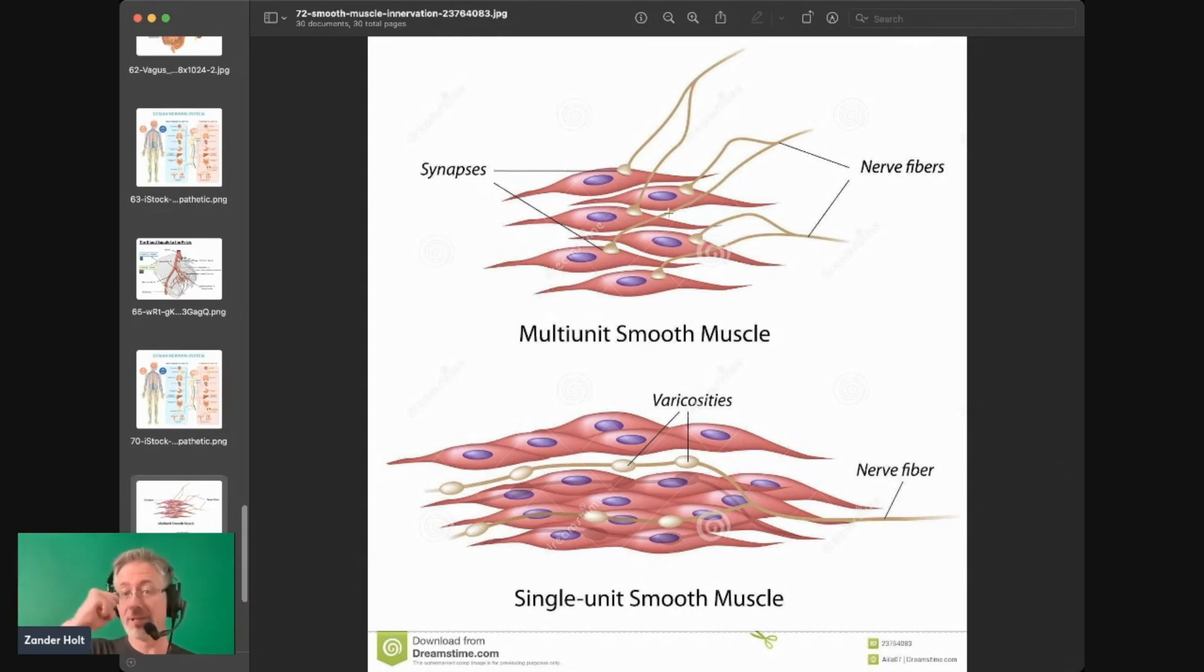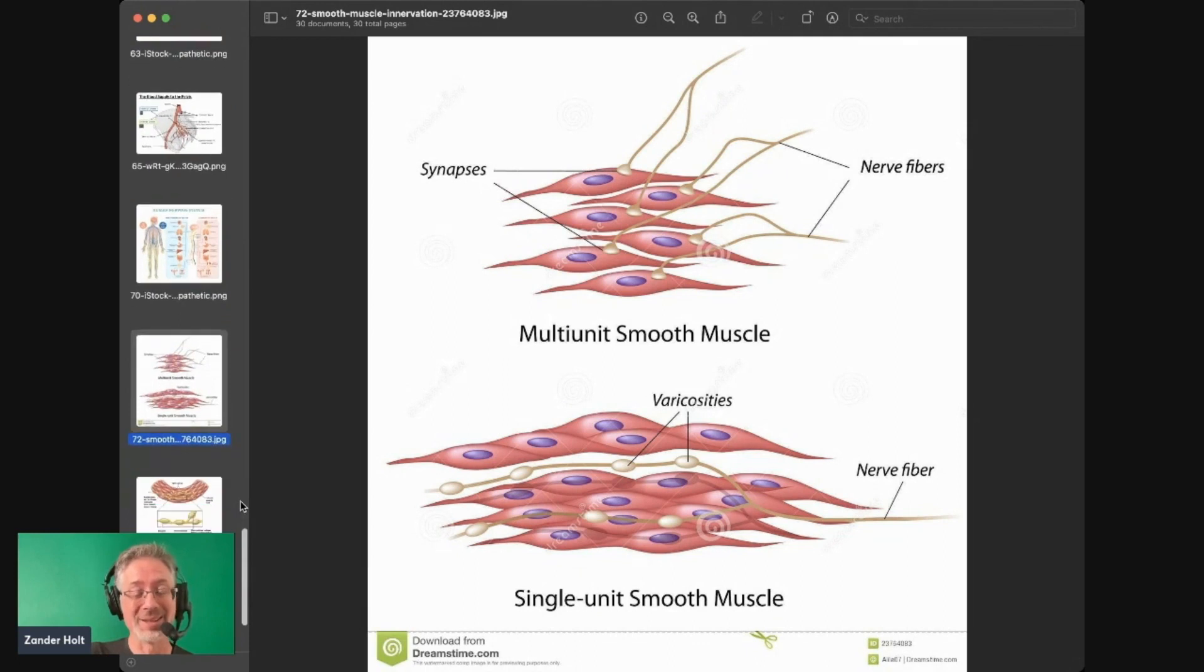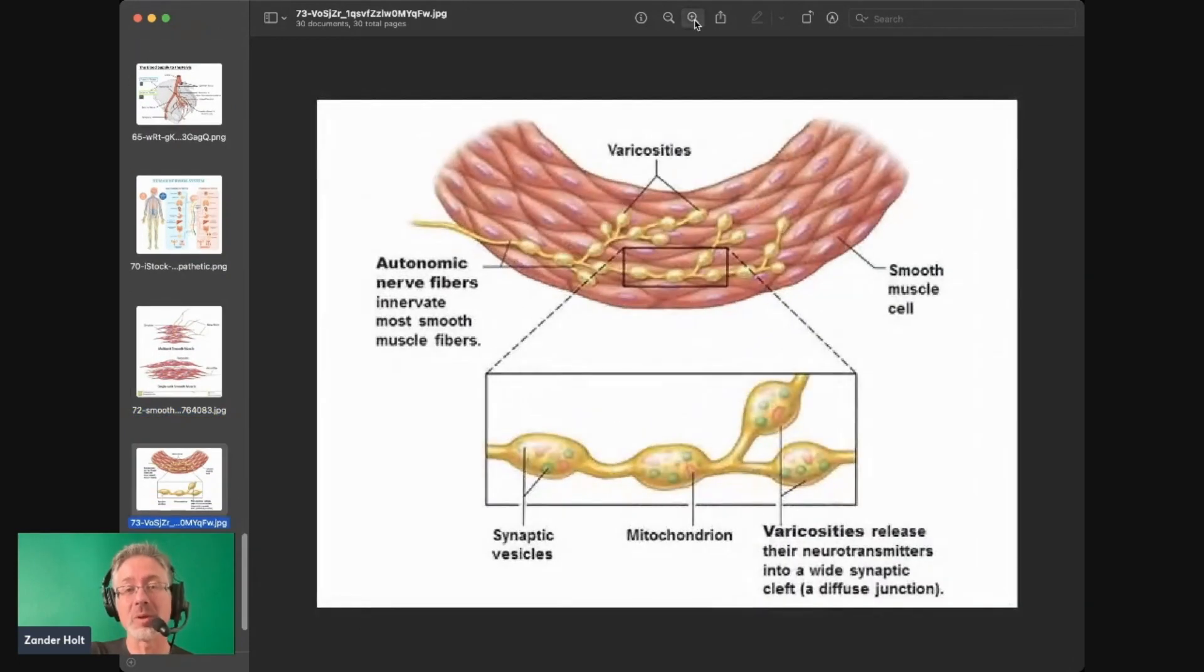So this is actually showing the smooth muscle fibers that are inside of each one of these vessels. And so when it gets a signal from the parasympathetic nervous system, it relaxes, it allows these to spread out. When it gets signals from the sympathetic nervous system, fight or flight, it constricts.